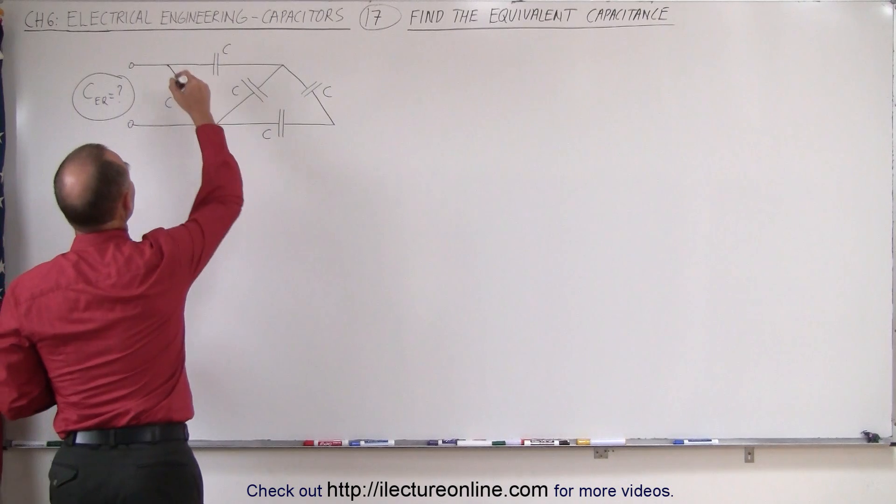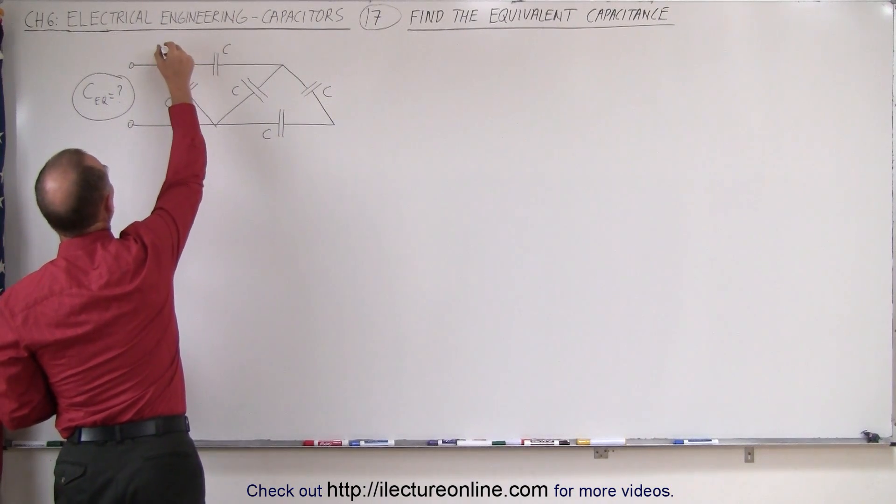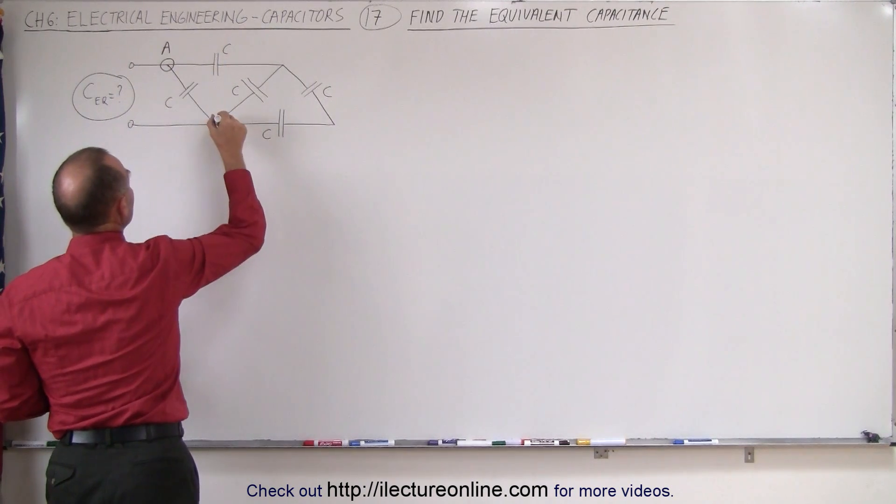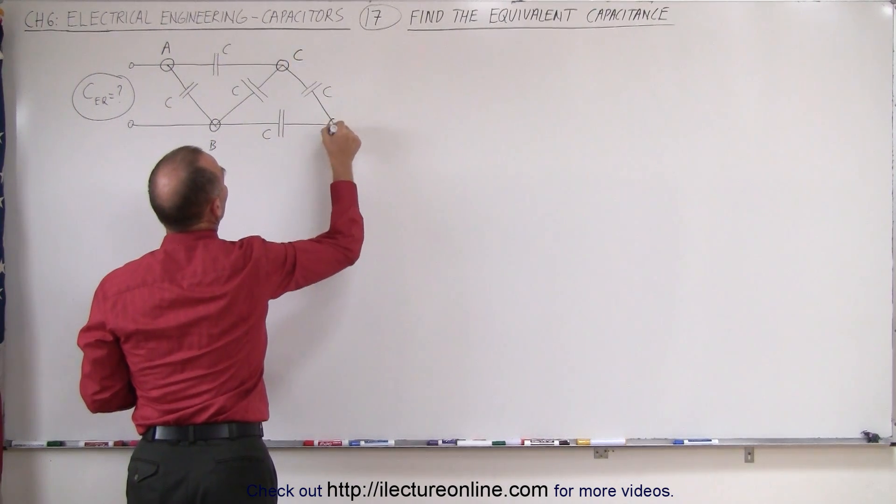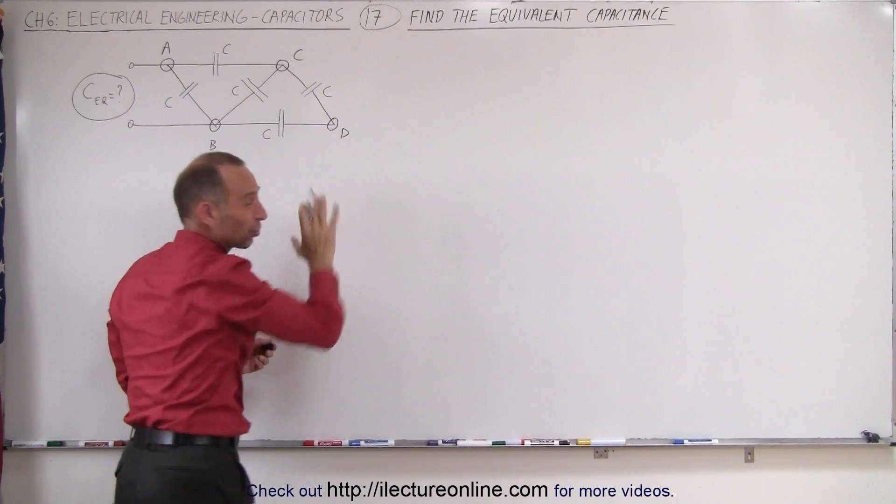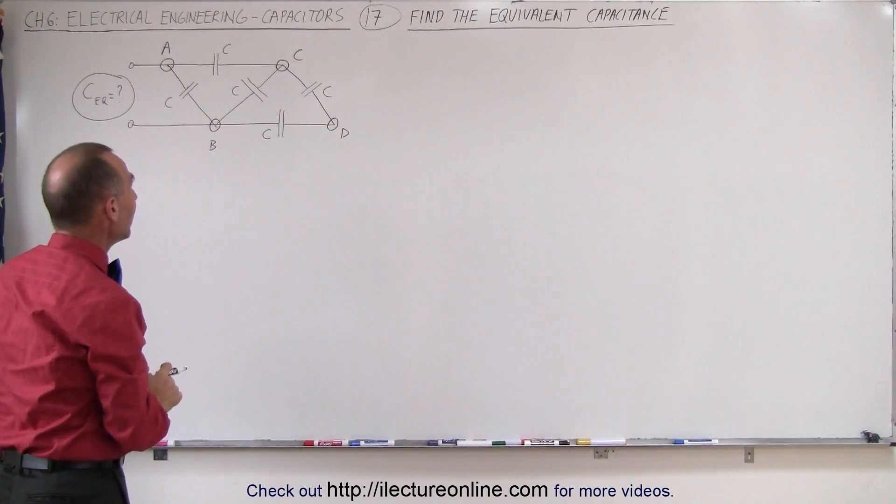To do that, we can say that we have a junction here. Let's denote all the junctions. Let's call this Junction A, Junction B, Junction C, and Junction D. Actually, this is not really a junction, but it's a corner. I'll go ahead and mark it anyway.